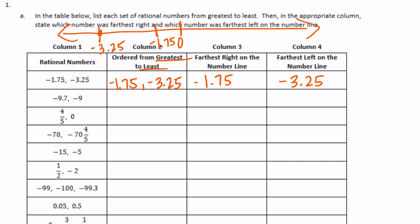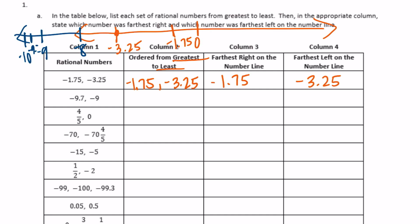Negative 9 and 7 tenths, and negative 9. On the number line, negative 9 would be down there, and negative 9 and 7 tenths would be between negative 9 and negative 10. So negative 9 and 7 tenths is smaller. The greater one is negative 9, then negative 9 and 7 tenths. Furthest to the right on the number line is negative 9. Furthest to the left is negative 9 and 7 tenths.